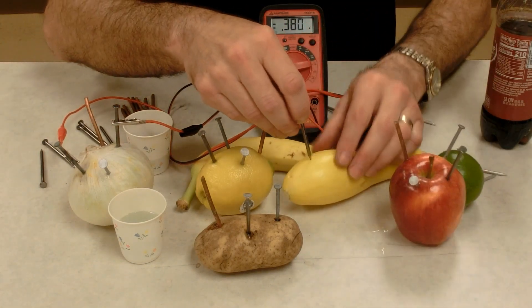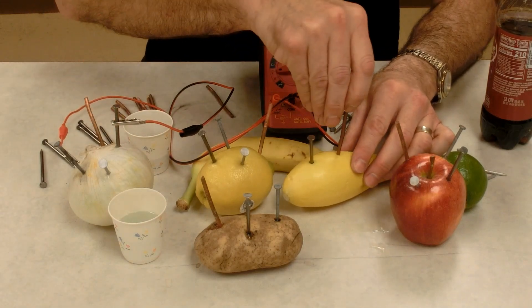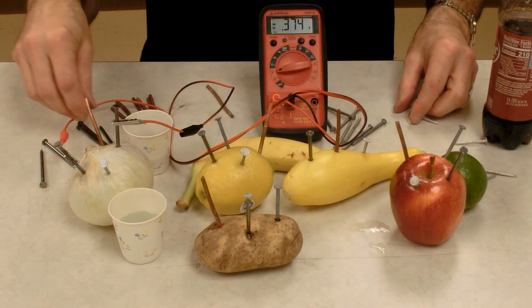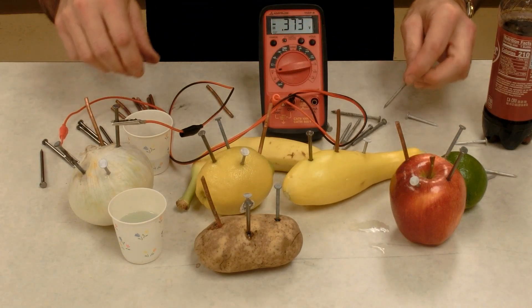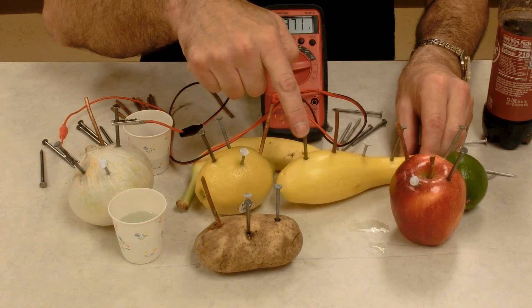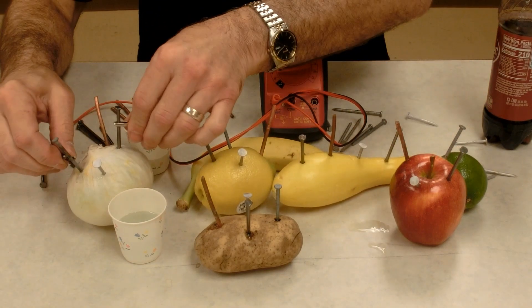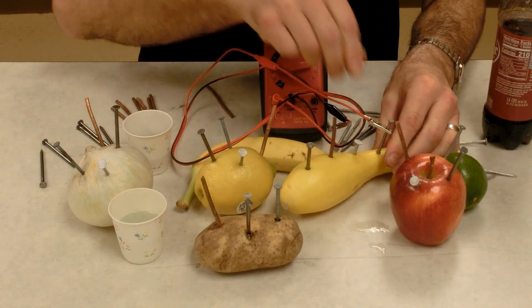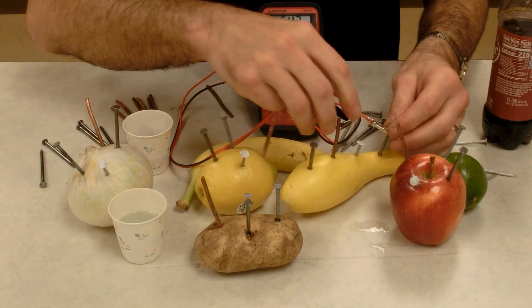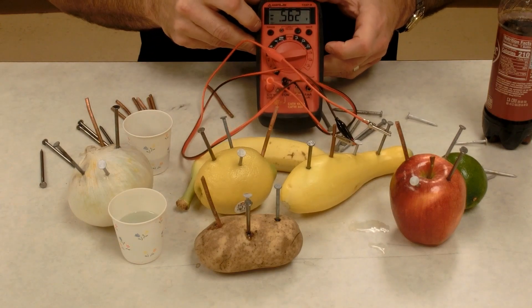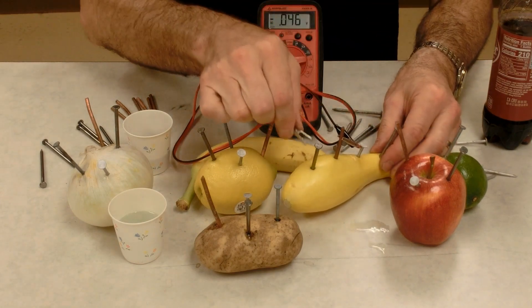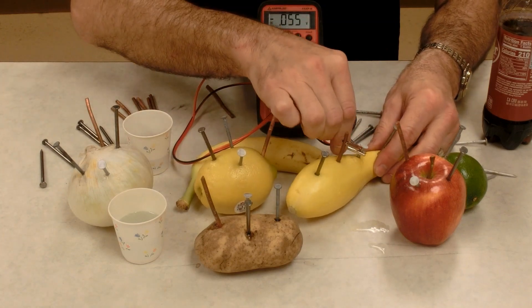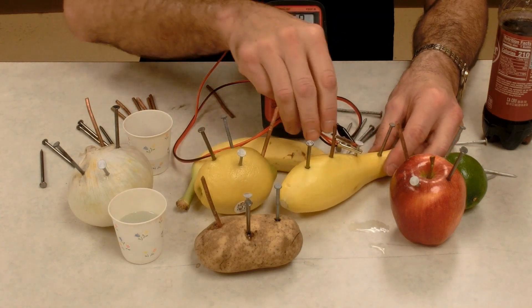We'll try the squash. We've got copper, steel, aluminum, and zinc. Copper and zinc, 0.56 volts. Copper and steel, 0.2 volts. Copper and aluminum, 0.5 volts.